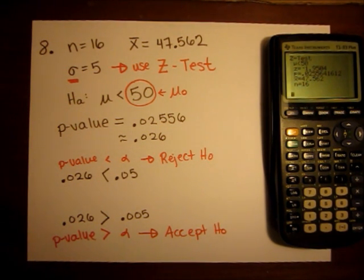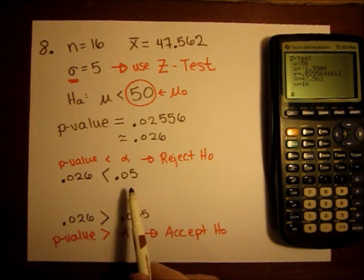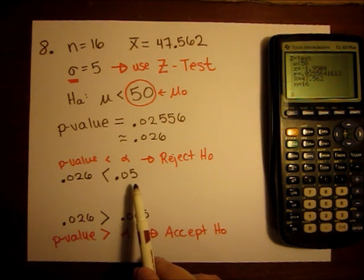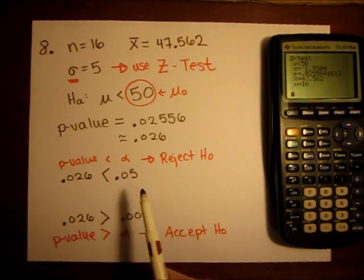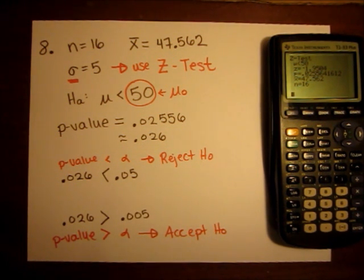So the answer is I'm going to reject the null hypothesis at the .05 level of significance, and I'm going to accept at the .005 level of significance. So with the choices that I have in this question, the answer is going to be D.